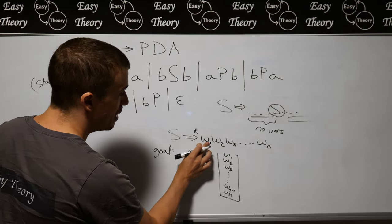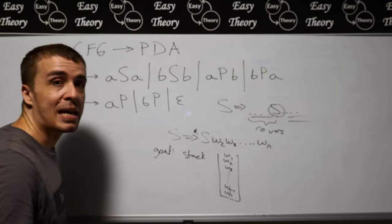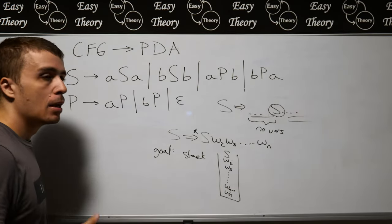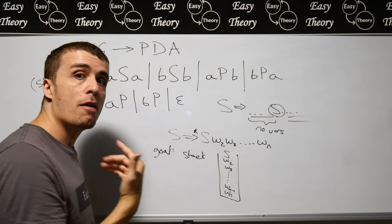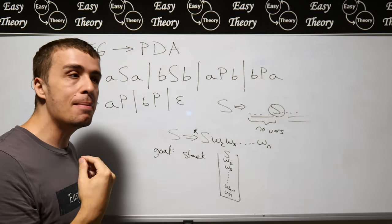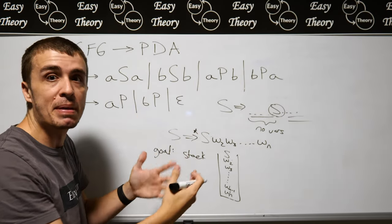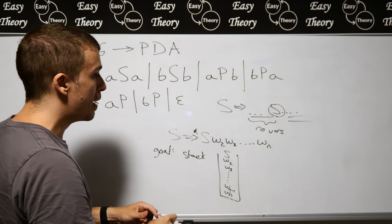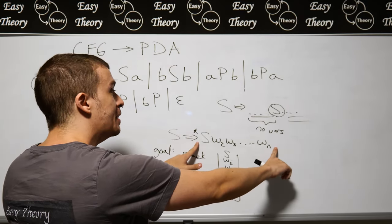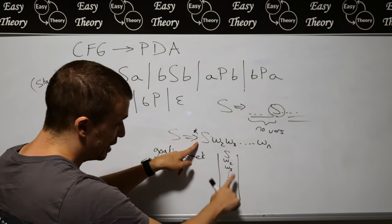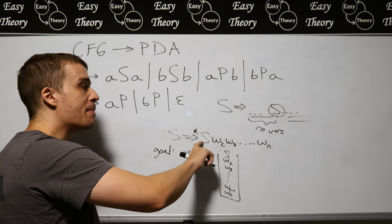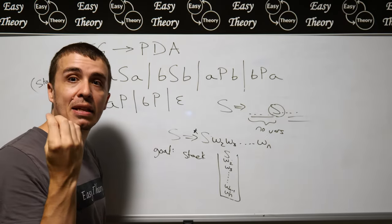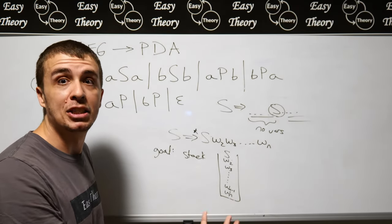The problem is: what if the first thing is a variable like S? Well, we can't just read off the input because the input string has terminals like A's and B's, whereas here we have a variable. But if we have a variable at the top of the stack coinciding with this position, that means there's nothing to the left of this S — it's the leftmost variable — and therefore we can apply some rule to it.